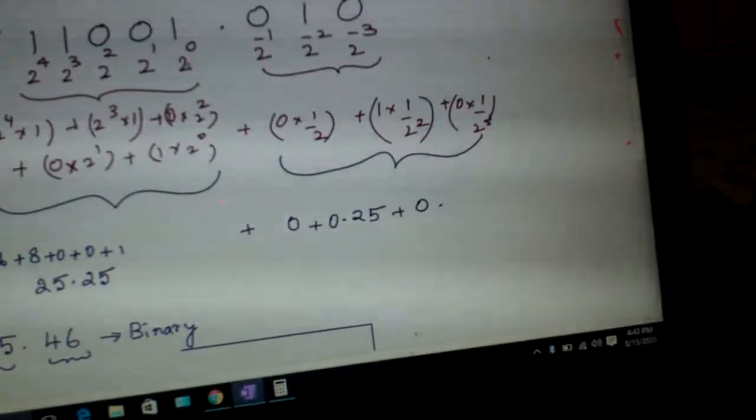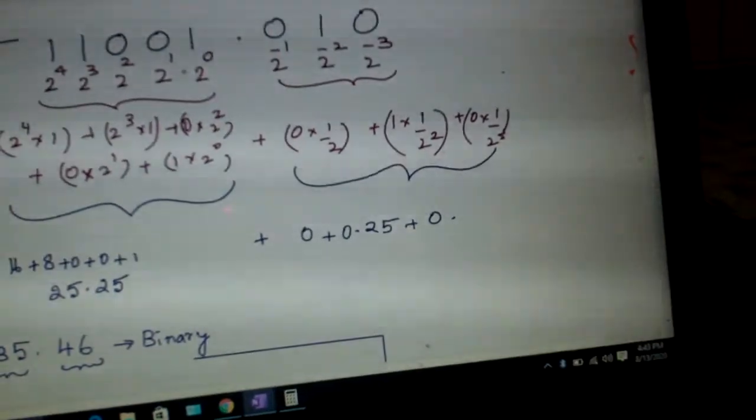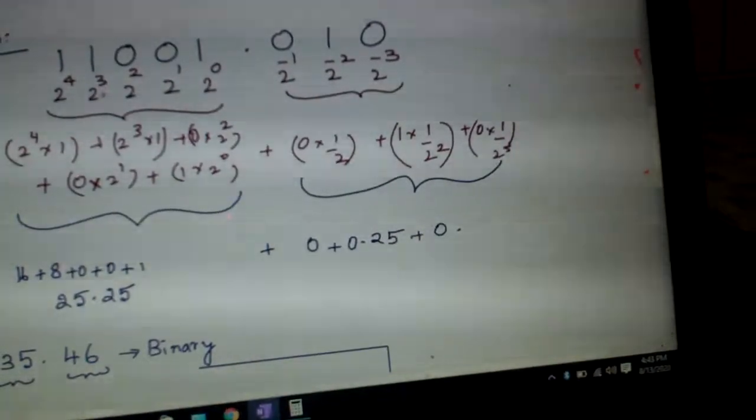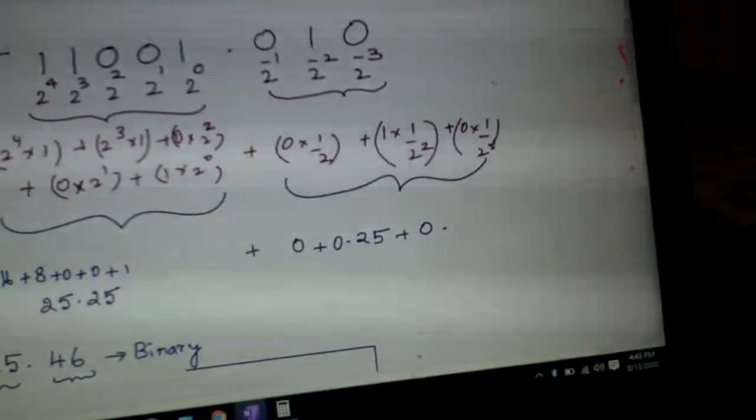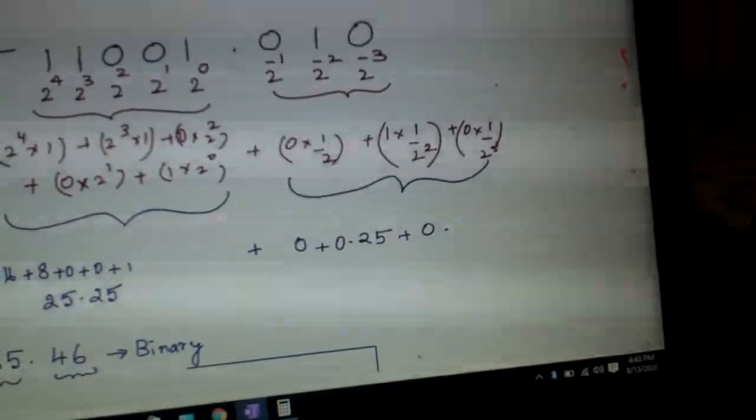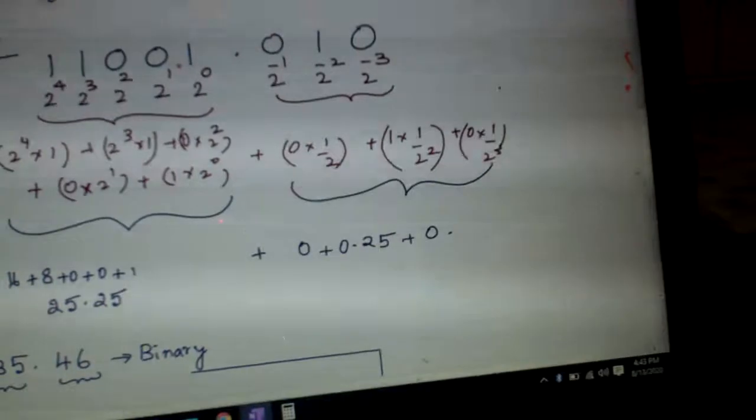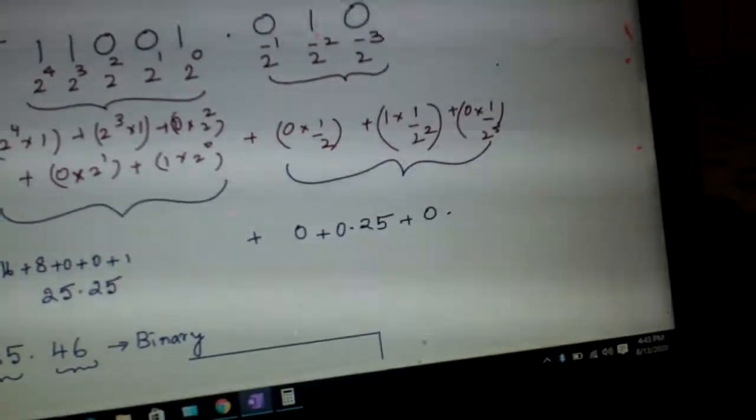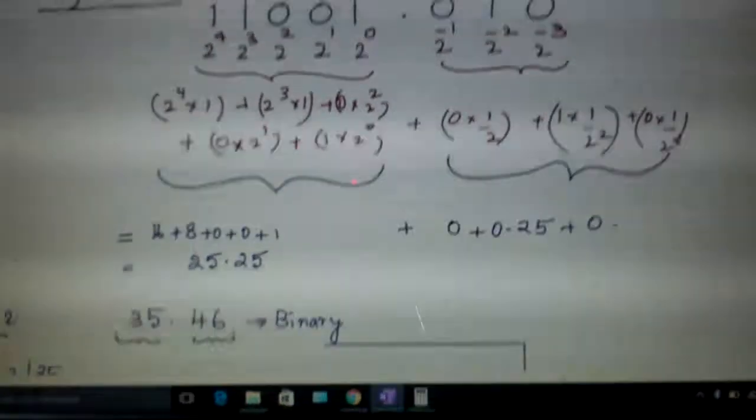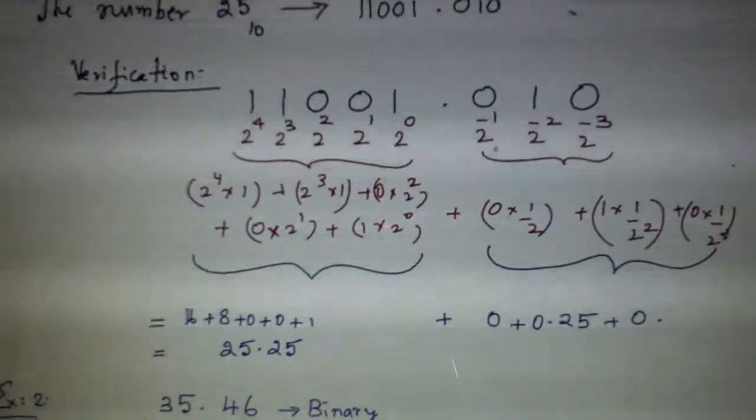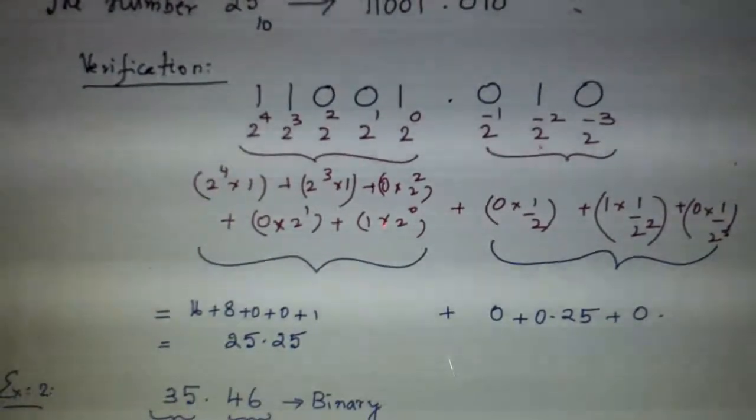And now convert back. This as before: 2^0, 2^1, 2^2, 2^3, 2^4 are the binary weights. And the place values are 11001. Here 010 are their place values. And the positional weights are 2^-1, 2^-2, 2^-3.